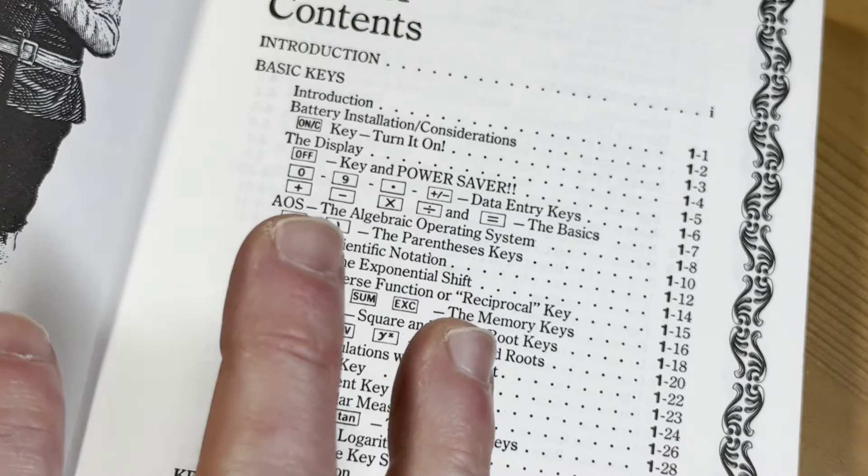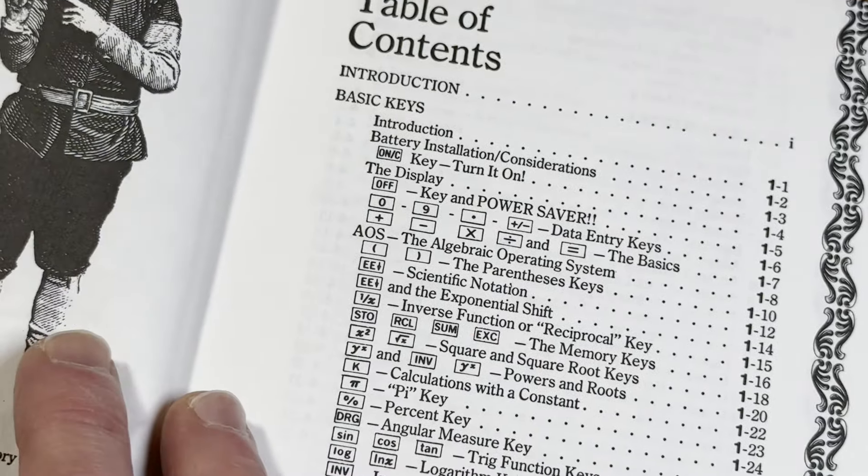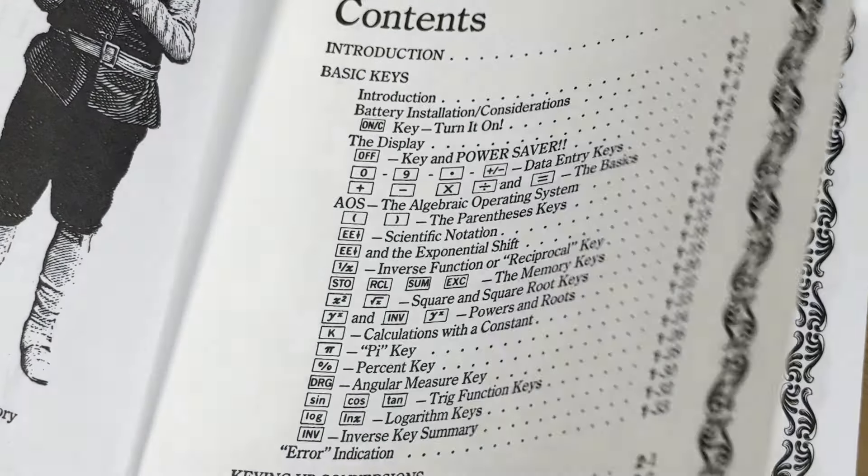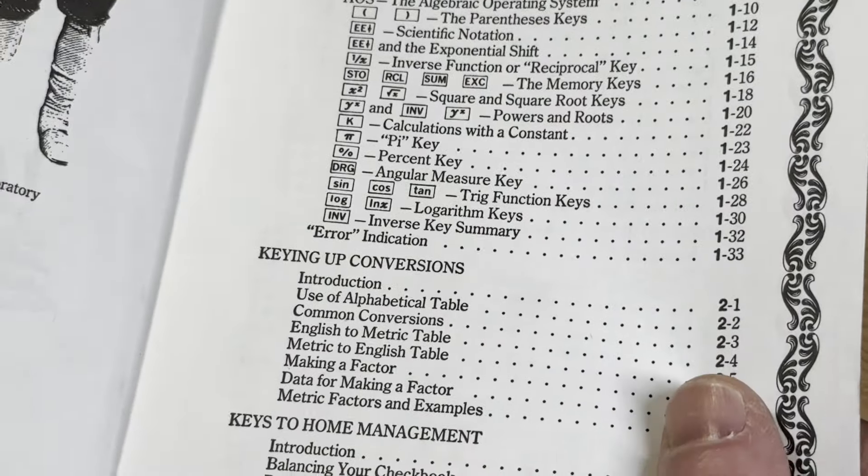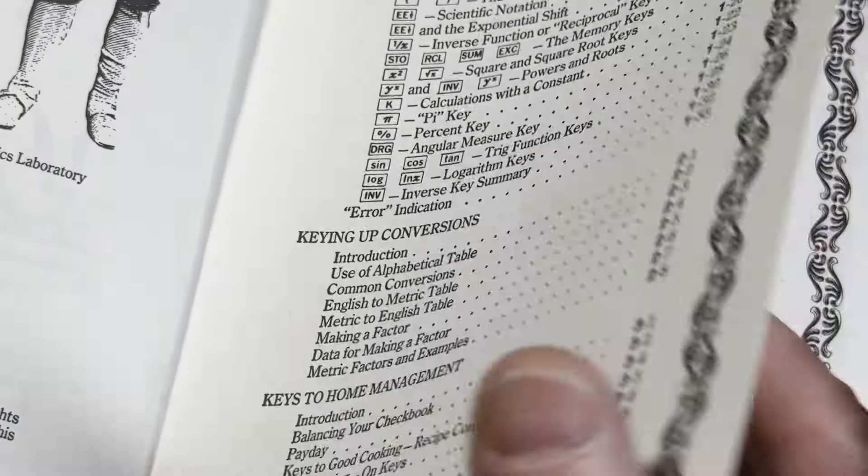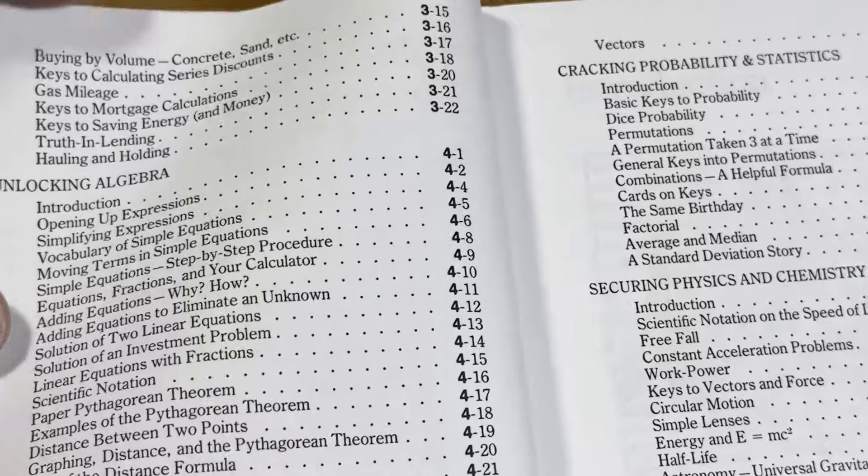But I don't know how it was in the 70s. I'm not from that era, so I don't know what calculators were the best, what calculators were the worst. But the fact that Texas Instruments has an entire book on the keys says something.